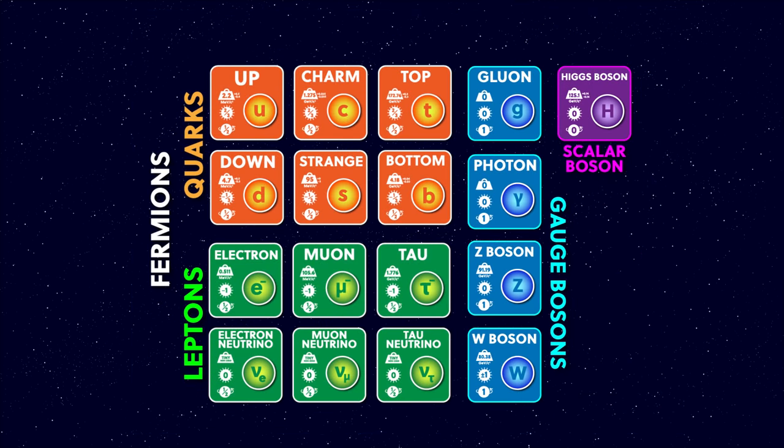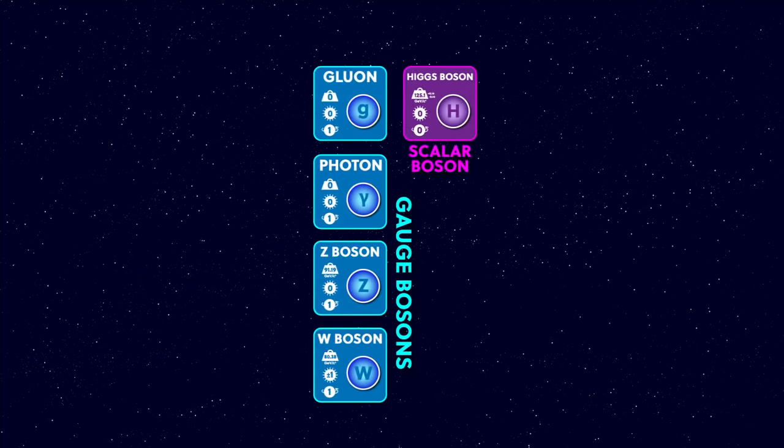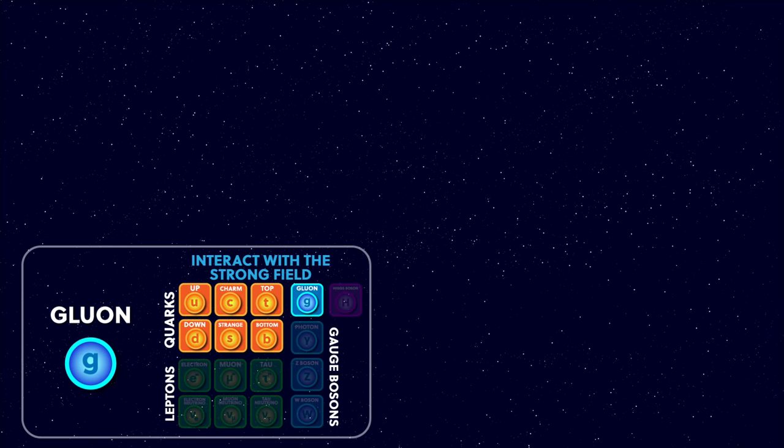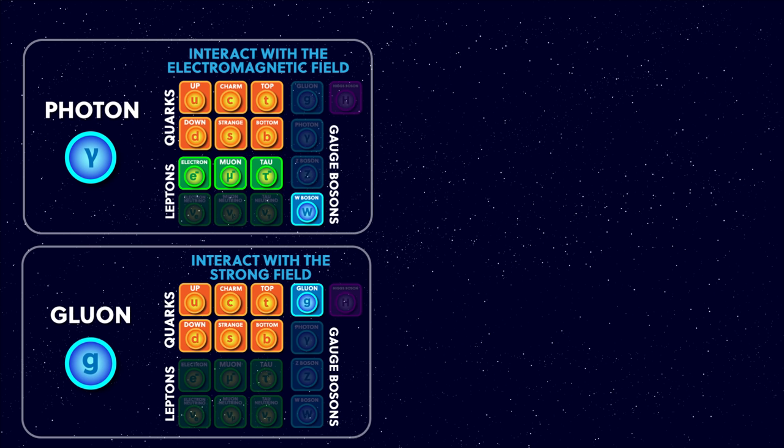This brings us to the last part of the standard model we need to look at — the bosons, also known as exchange particles or force carriers. The gluons we've already covered when I talked about colour charge and the strong force. The photons are how you are seeing right now — they carry the electromagnetic force and interact with anything with electric charge. However, the photons don't carry electric charge themselves, so they don't interact with each other, which is why they aren't included on the interaction chart even though they're the carriers of the electromagnetic force.